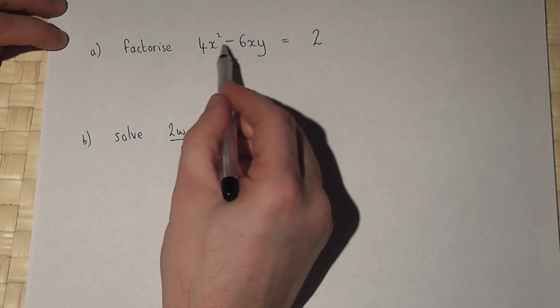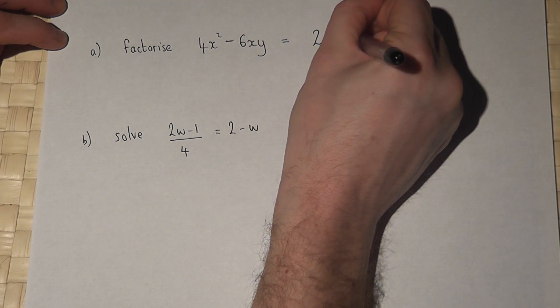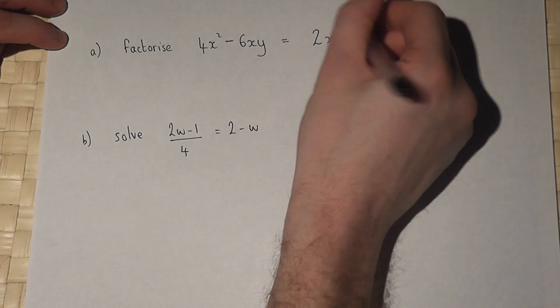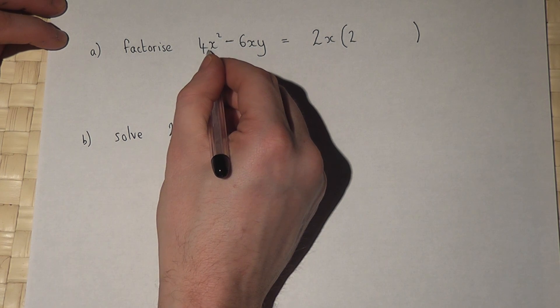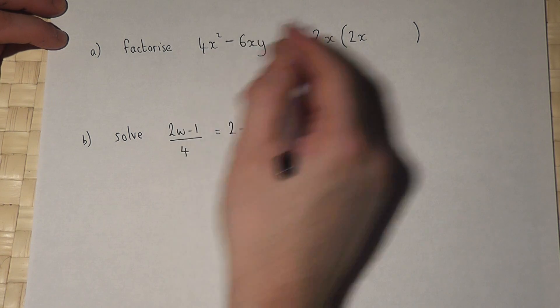There's also an X here and also here, so I can put X. Then in the bracket, to get a 4 requires another 2 because 2 times 2 is 4. To get the X squared requires another X because X times X is X squared.